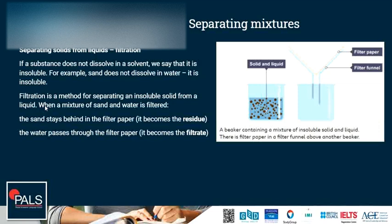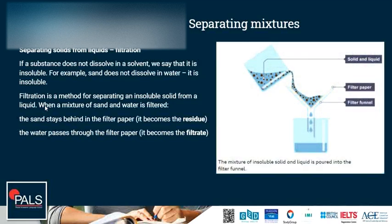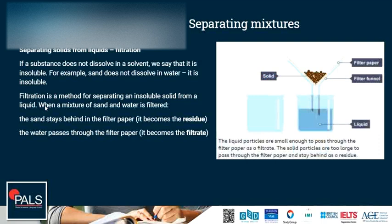On the right we can see an example. We have a beaker containing a mixture of insoluble solid and liquid, and the filter funnel and filter paper prepared over another beaker. The mixture of insoluble solid and liquid is poured into the filter funnel and is filtered. The solid particles remain in the filter paper — they are not able to pass through — they are the residue. The liquid is separated from the solid, and the remaining liquid in the new beaker is the filtrate.